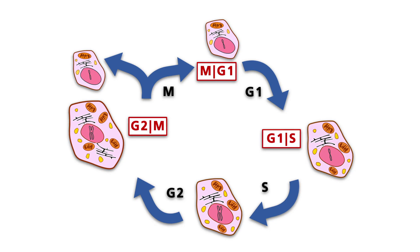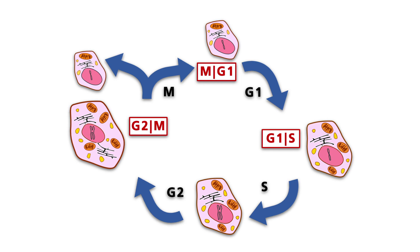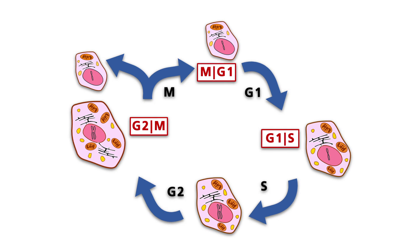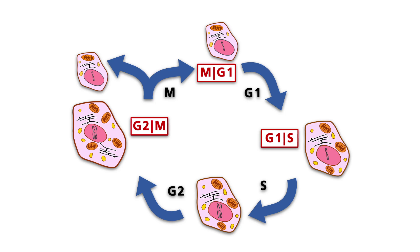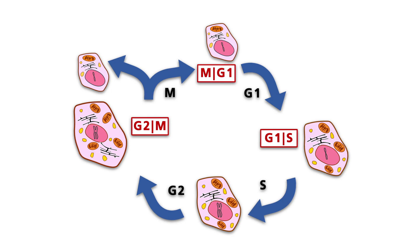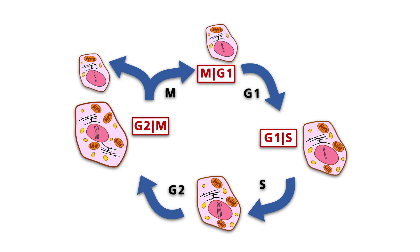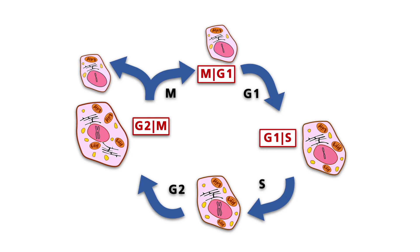During tumorigenesis, all three checkpoints are relevant. The MG1 point and the G2M point play important roles in genomic stability, while the G1S point is key to regulating the proliferation rate.